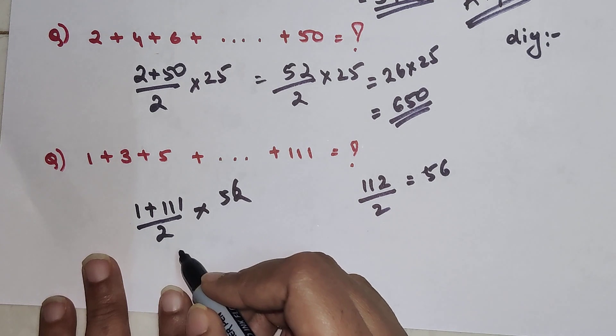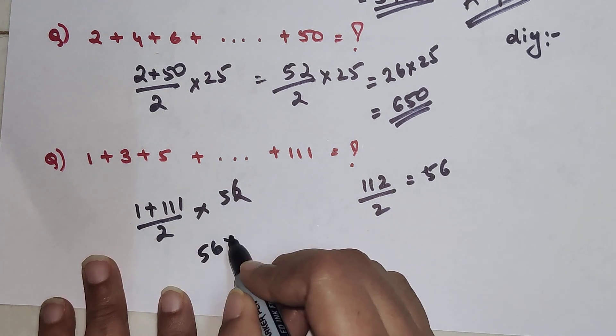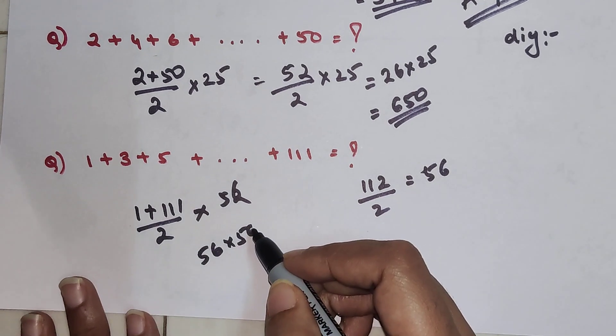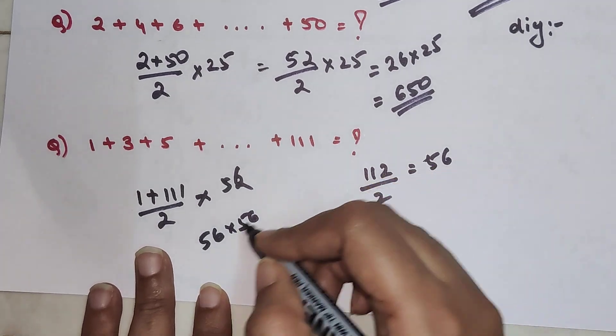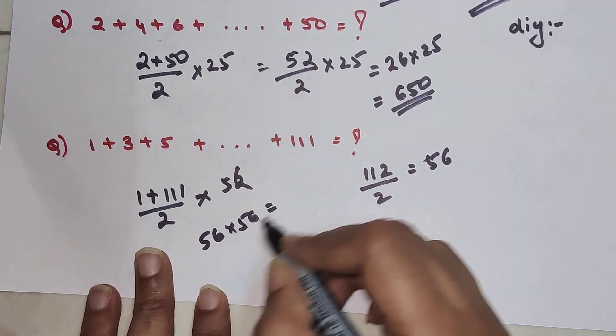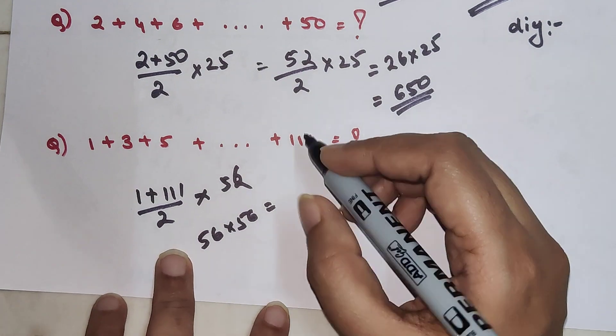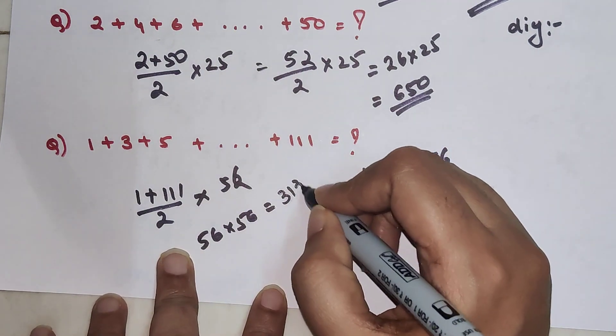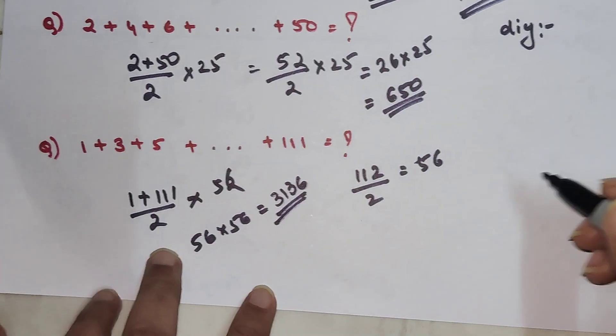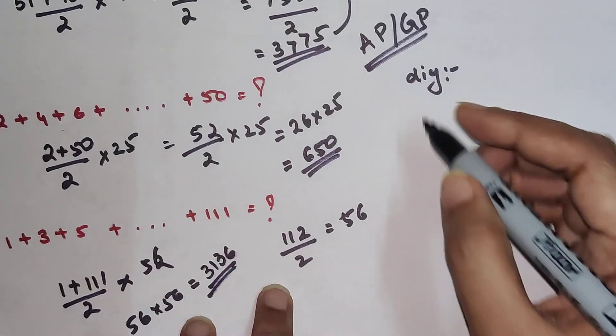When you have this, it's 112 divided by 2, that is also 56 times 56. What we get over here is 56 squared, which is 3136.